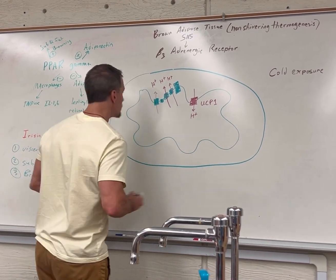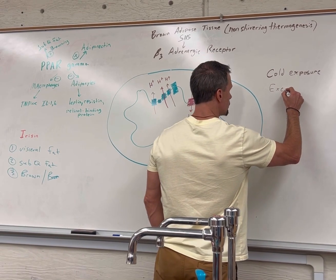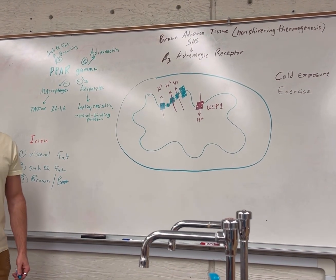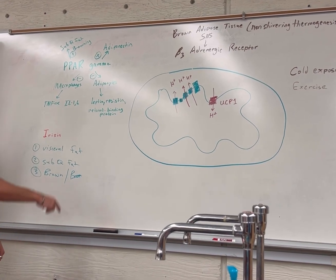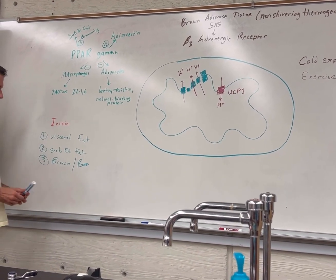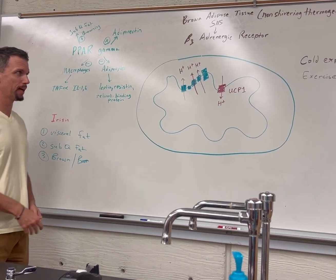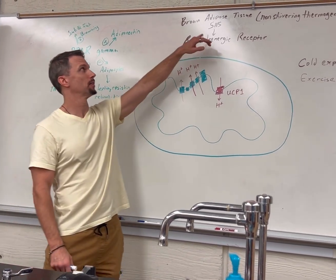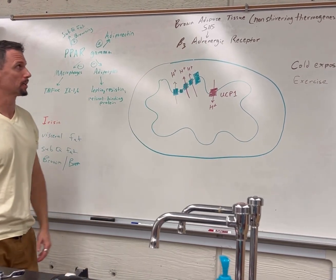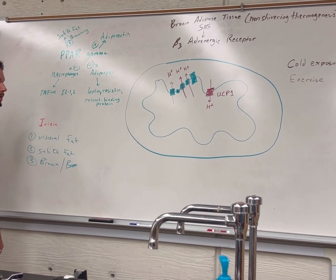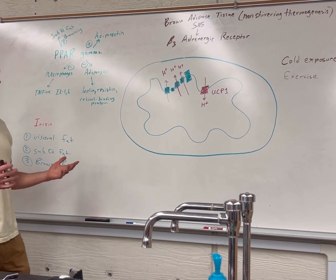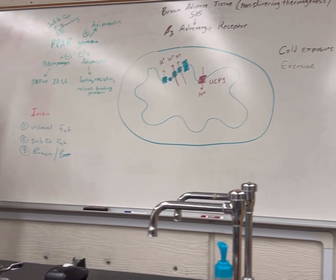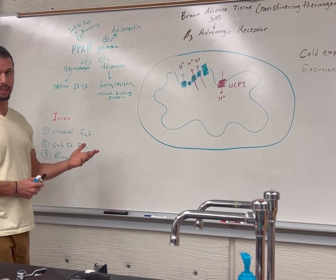Another one is exercise. Exercise basically helps everything. Exercise stimulates something called irisin, and irisin causes browning of white fat and activates brown fat. You're gonna get more brown fat and more activation when you're exercising. Your sympathetic nervous system is stimulated, which activates the brown fat. All kinds of exercise, whether cardio or strength training, stimulate irisin from contracting muscles. Irisin also increases BDNF, brain-derived neurotrophic factor.